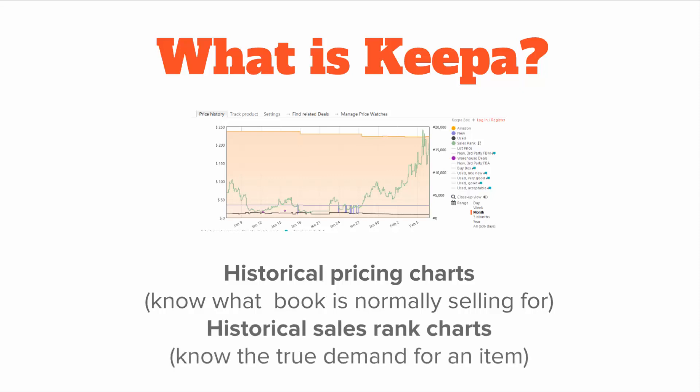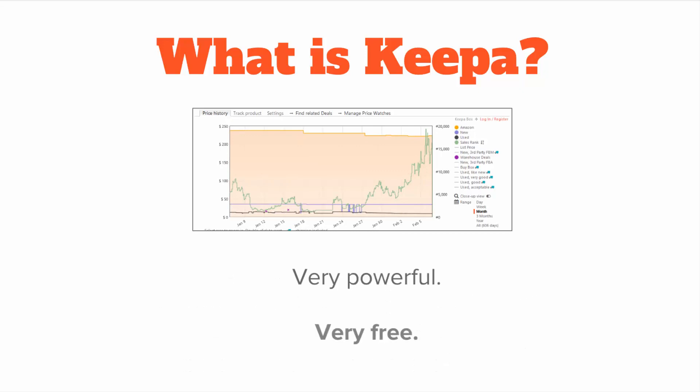And it is historical sales rank charts that actually allow you to see the true demand for an item. Is demand on the upswing? Is it on the downswing? Is it temporarily low or temporarily high? This allows you to make an intelligent purchasing decision. Both of these things are crucial to buying the right books. You want to buy at the low point — when they're cheapest — and you want to buy books that are only in reasonably high demand. These are two crucial things when it comes to making an intelligent purchasing decision when you do online book arbitrage.